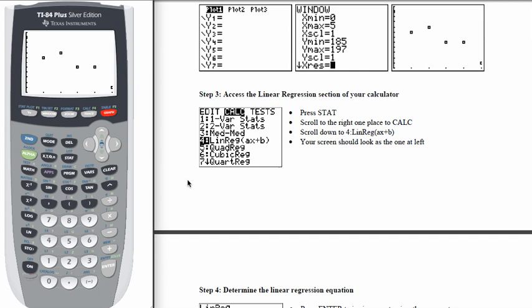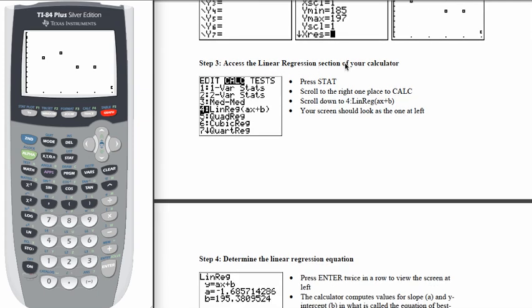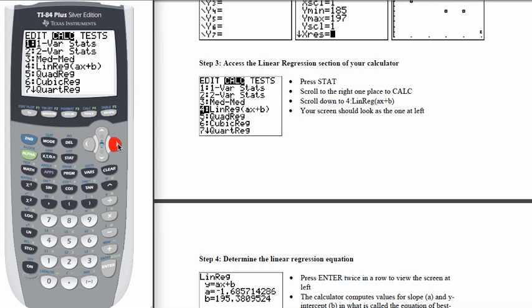Now step 3 to access linear regression section of the calculator, we're going to go back to the stat menu, but now we want this calculate area. So we're going to arrow once to the right, and now we have all of our options for calculating with the data that are entered into L1 and L2. We are interested in linear regression of the form AX plus B.